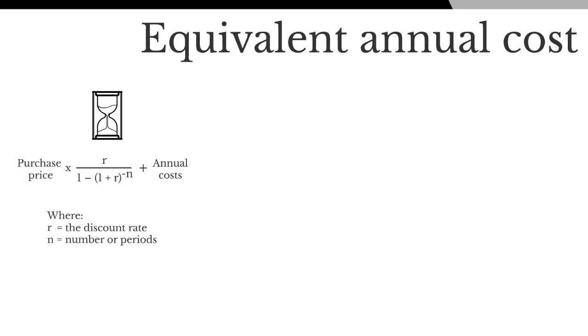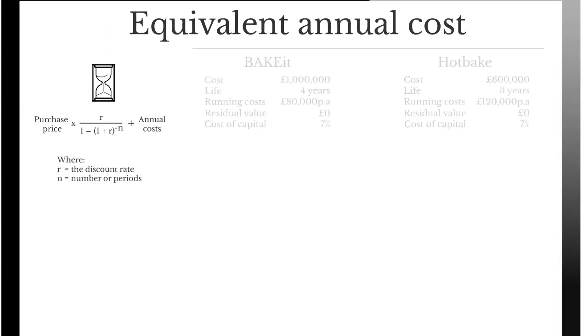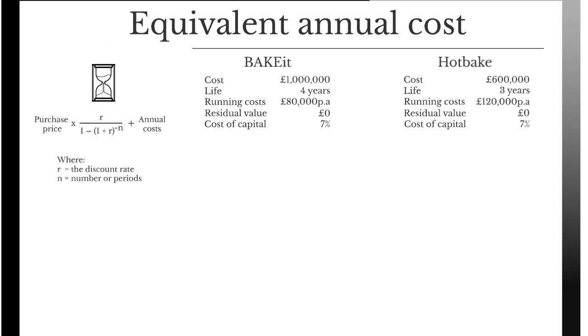Let's use this formula now and calculate the answer to the same question using the Hot Bake and the Bake It. We can see we've got the same statistics here: the same cost for each, £1,000,000 for the Bake It, £600,000 for the Hot Bake, four years running costs £80,000 per annum, and we have the cost of capital of 7%, which is the same as it was in the lowest common multiple method.